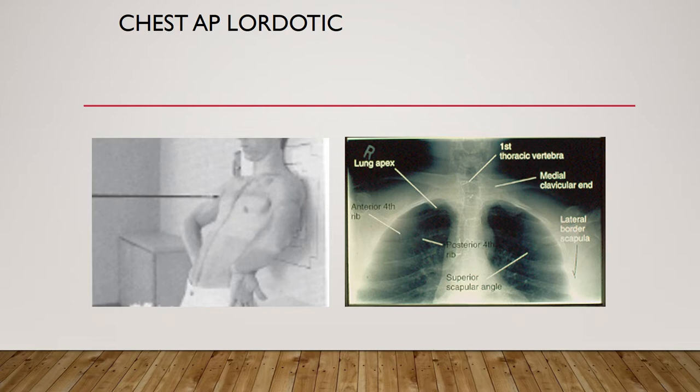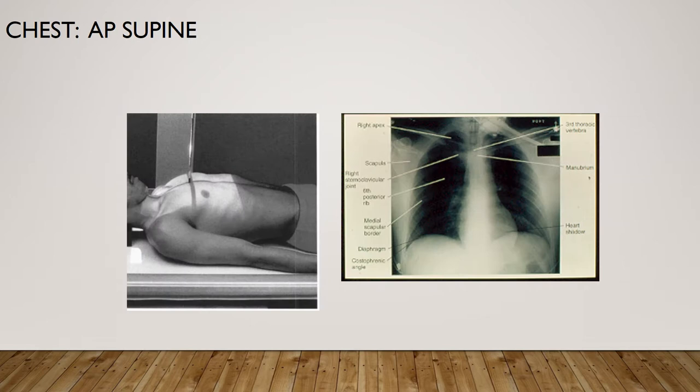If the patient is too weak, unstable, or unable to assume the erect lordotic position, take this with the patient supine on the x-ray table. The patient is going to be AP supine, and you're going to angle the central ray about 15 to 20 degrees cephalic if the patient is centered on the x-ray table.